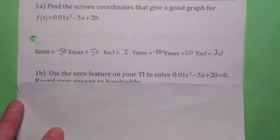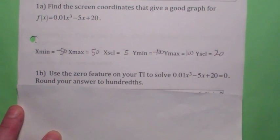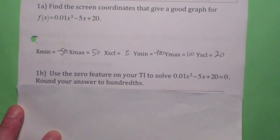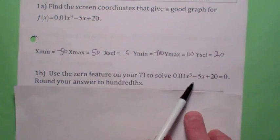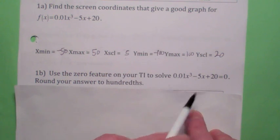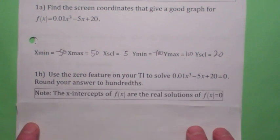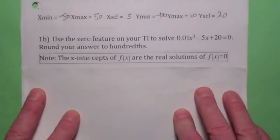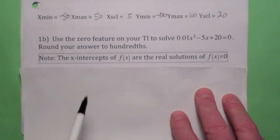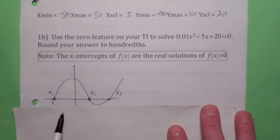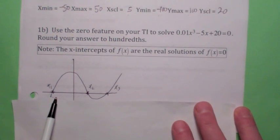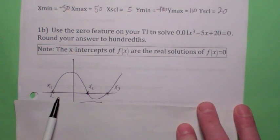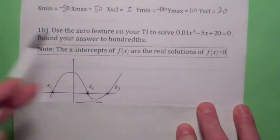So what we're going to talk about today first is how to solve equations with your TI. Suppose you wanted to find the solutions to this equation. We're talking about the real solutions to this equation, the real numbers that make this equal 0. And the key to understanding this idea is to realize that the x-intercepts of the graph of f are precisely the real solutions to f equals 0.